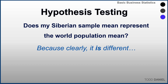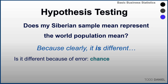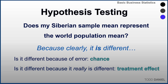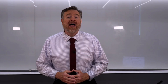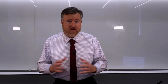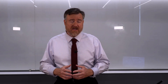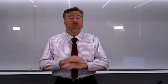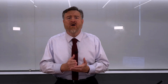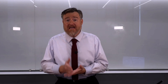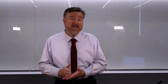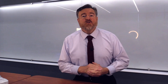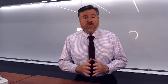Clearly, it is different. Is it different because of random error — what we would call chance — or is that Siberian sample mean different because it's really different, meaning there's some kind of treatment effect? At this point, we're not specifying what we think that treatment effect would be. Does it have to do with something in the water or something in the air? We're not going to try to guess. All we want to know is how likely is it that we would get a score like 11 from a sample if that sample mean was truly supposed to be 7.5.